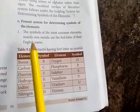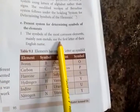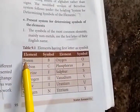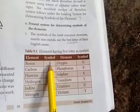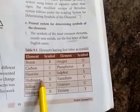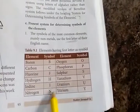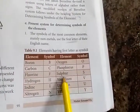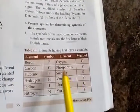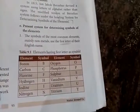Most common elements — mainly non-metals — use the first letter of their English name as their symbol. For example: Boron B, Carbon C, Fluorine F, Hydrogen H, Iodine I, Nitrogen N, Oxygen O, Phosphorus P, Sulphur S, Vanadium V, Uranium U, Yttrium Y.